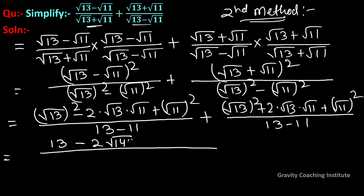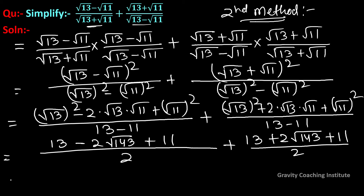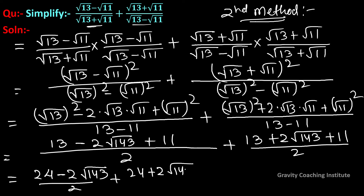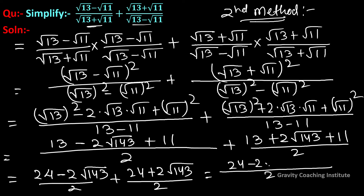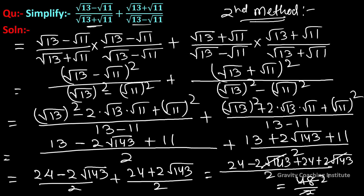We get (13 - 2√143 + 11)/2 + (13 + 2√143 + 11)/2. Adding: (24 - 2√143 + 24 + 2√143)/2. The 2√143 terms cancel, giving 48/2 = 24. Answer is 24.